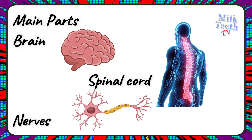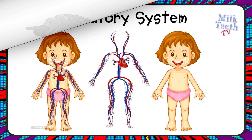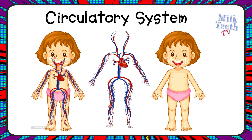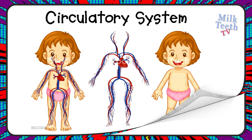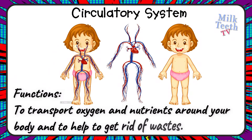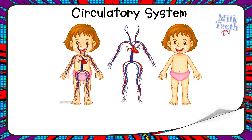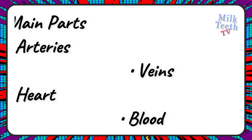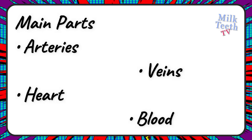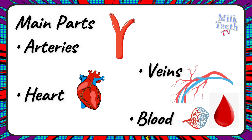The circulatory system. Functions of the circulatory system: to transport oxygen and nutrients around your body and to help get rid of waste. Main parts of the circulatory system: the arteries, the veins, the heart, and the blood.